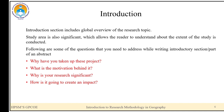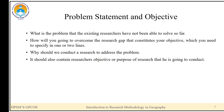Following are some questions you need to address while writing the introductory section of an abstract: Why have you taken up this project, or what is the motivation behind it? Why is your research significant, and how is it going to create an impact? Regarding problem statement and objective: what is the problem that existing researchers have not been able to solve? How will you overcome the research gap — that constitutes your objective, which you need to specify in one or two lines. It should also contain the researcher's purpose of research.